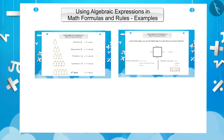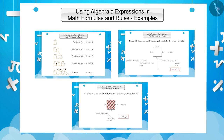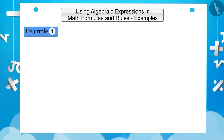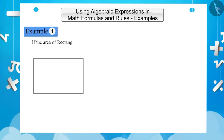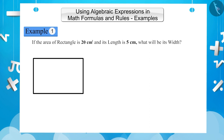Till now we learned about mathematical formulas and rules. In this video we will understand them better with the help of examples. Example 1: if the area of a rectangle is 20 square centimeters and its length is 5 centimeters, what will be its width? Let's solve it together.